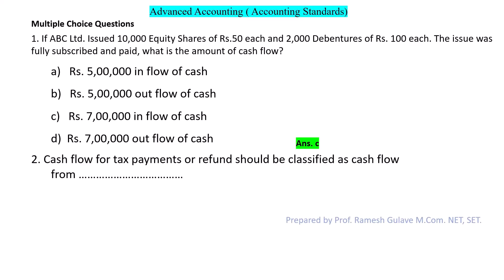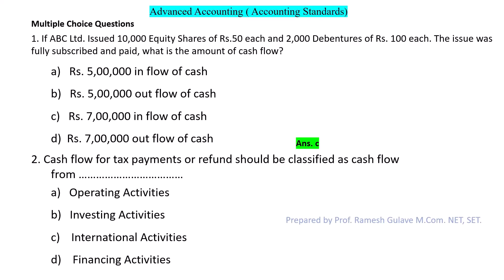Next question: Cash flow for tax payment or refund should be classified as cash flow from which activity? As per Accounting Standard 3, cash flows are classified into three activities: operating activities, investing activities, and financing activities. Tax payment or refund is considered as operating activity. So the answer for this question is option A: operating activities.